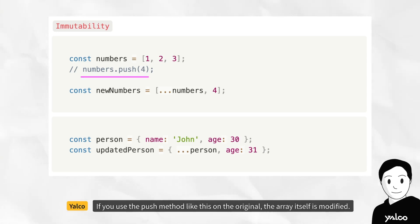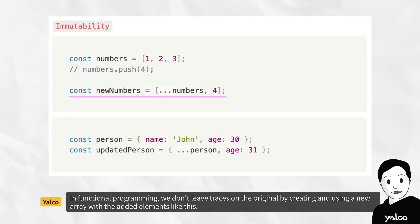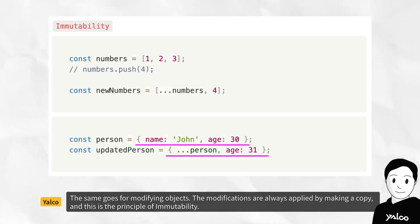In functional programming, we don't leave traces on the original by creating and using a new array with the added elements like this. The same goes for modifying objects. The modifications are always applied by making a copy, and this is the principle of immutability.